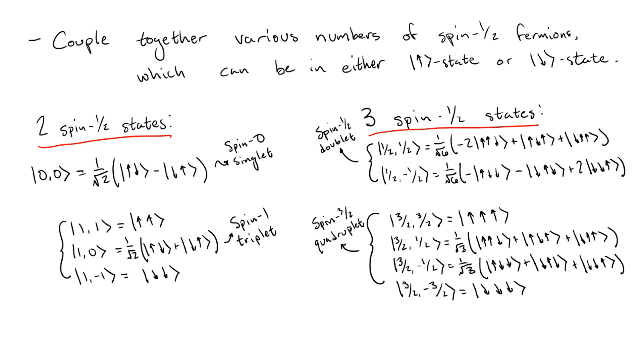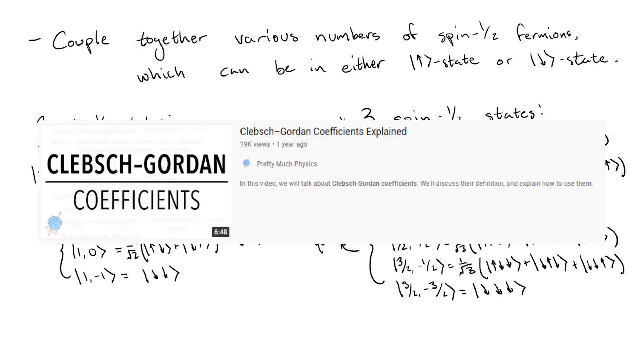The numerical coefficients of all of these states are not super important for this discussion, but they can be found either by going through a fairly tedious quantum mechanics exercise, or can more simply be given by the Clebsch-Gordan coefficients, which Pretty Much Physics has an excellent discussion of that I'll link in the description.